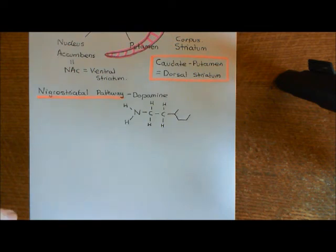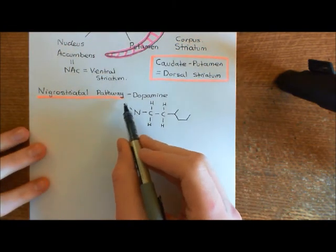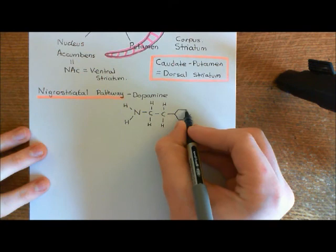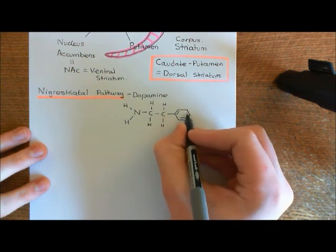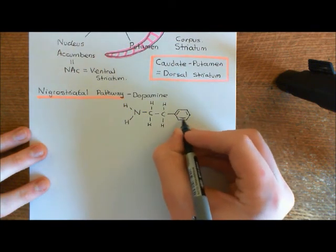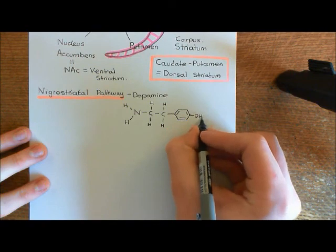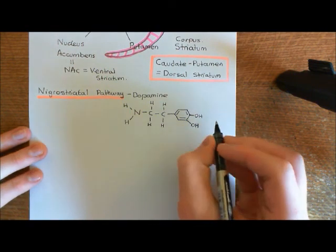We were discussing the structure of dopamine. Dopamine has a single amino group, followed by an ethylene group. The other key structure within dopamine is what's known as a catechol ring. A catechol ring consists of a benzene ring with two alcohol groups coming off it.